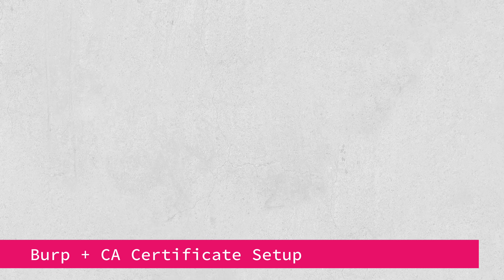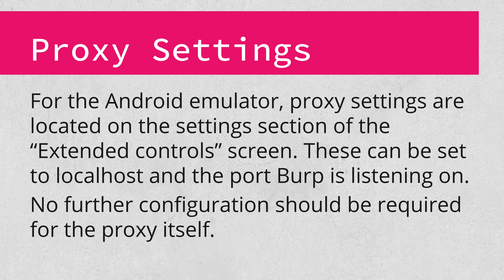Now that we've covered tools, let's talk about setting up Burp for Android hacking. If you haven't used Burp before, definitely check out our video series on the subject, which covers beginner level to master level Burp usage. To set up the proxy on the Android emulator, start a device and click the dot dot dot button. Then click the settings tab on the extended controls window, and proxy settings are there. After this, the actual settings are easy — just set the host to localhost, and the port to whatever Burp is listening on.